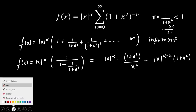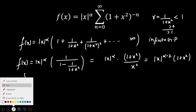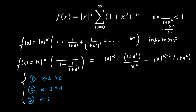Now there will be 3 cases possible. The factor (1 + x²) is always finite, so we need to comment on the value of alpha. The power (α−2) can be positive, negative, or zero. Case 1: α−2 > 0. Case 2: α−2 = 0. Case 3: α−2 < 0.